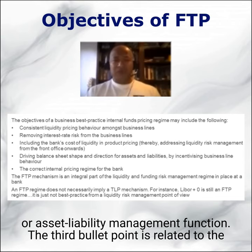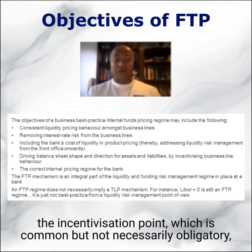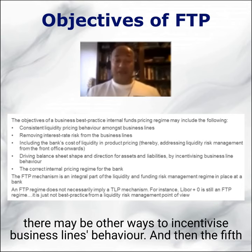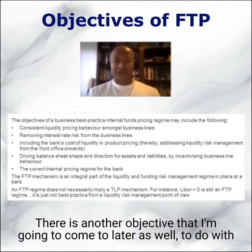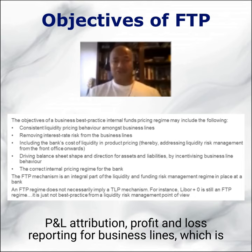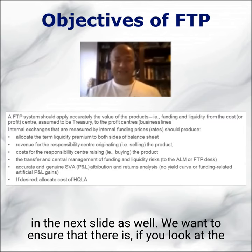The third objective is related to the first — to include the cost of liquidity. The fourth is the incentivization point, which is common but not necessarily obligatory, as there may be other ways to incentivize business behavior. The fifth objective relates to points one and three: establishing a correct internal pricing regime for the bank. There is also another objective around P&L attribution and profit and loss reporting for business lines, which I'll come to next.